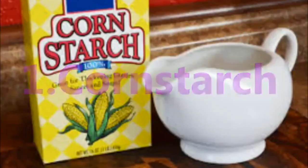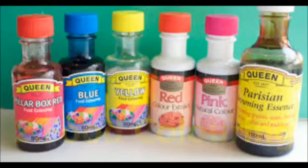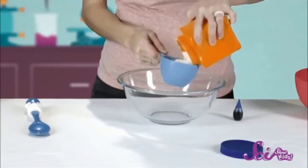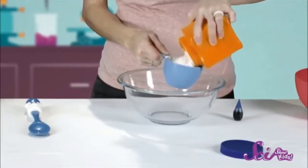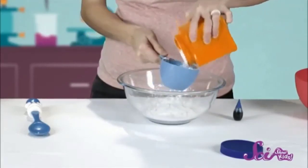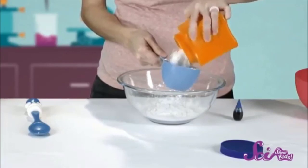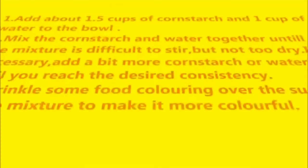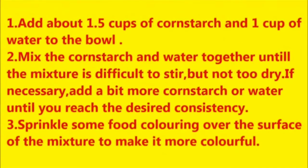To demonstrate non-Newtonian behavior, the materials needed are cornstarch, food coloring, a stirrer, a bowl, and water. Add about one and a half cups of cornstarch and one cup of water to the bowl. Mix the cornstarch and water together until the mixture is difficult to stir but not too dry. If necessary, add a bit more cornstarch or water until you reach the desired consistency.